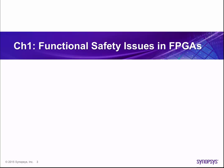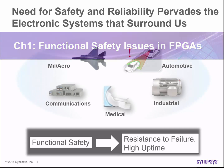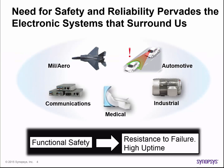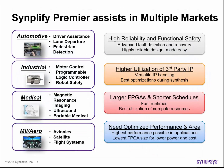Let's discuss the nature of functional safety issues in FPGAs and what we can do during the design process to address them. The need for functional safety pervades electronic systems that surround us. These systems need to exhibit resistance to failure and operate with high uptime. Failure of a military, aerospace, medical, industrial, or automotive device can cause life-threatening results. Communication systems need to maintain high uptimes so that the quality of service delivered is high.